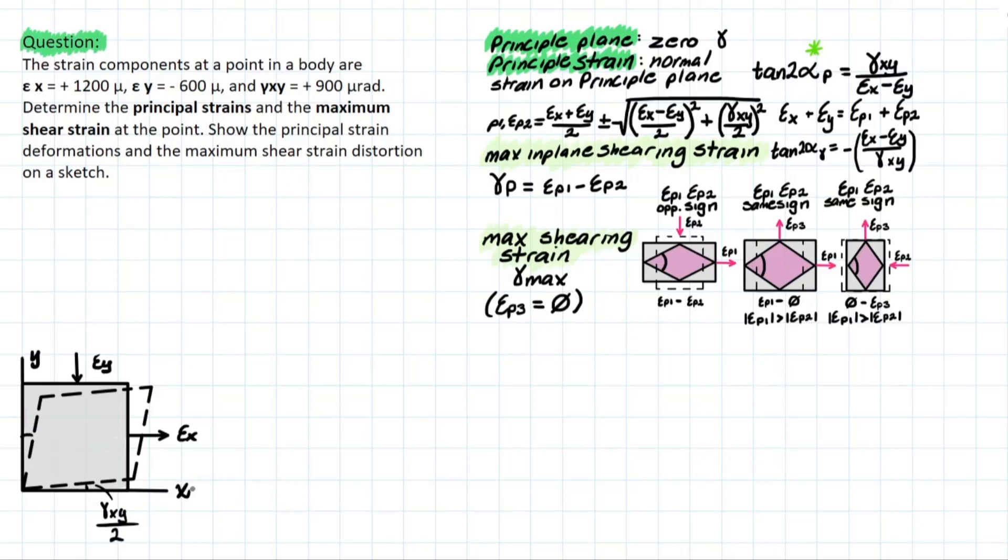So the first thing we need to do is visualize the orientation that this element is going to take to develop principal planes in terms of strain. How are we going to do this? We can use this equation up here to determine the angle theta P, which is going to be from X to that new axis where this element is going to be resting, where it generates those strains.